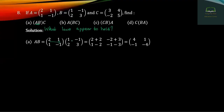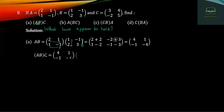First row, first column: 2, 2, 2 plus 2. First row, second column: minus 2, minus 3, minus 3. Second row, first column: minus 1, minus 2, minus 2. Second row, second column: minus 1, minus 3. Now: 4, minus 1, minus 4, minus 1, minus 4.